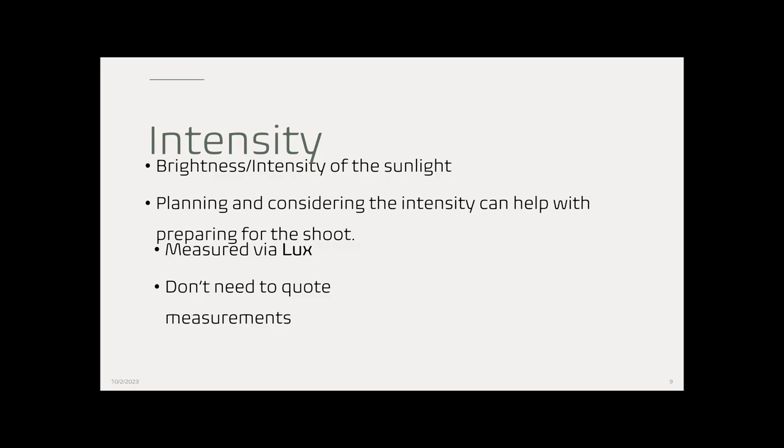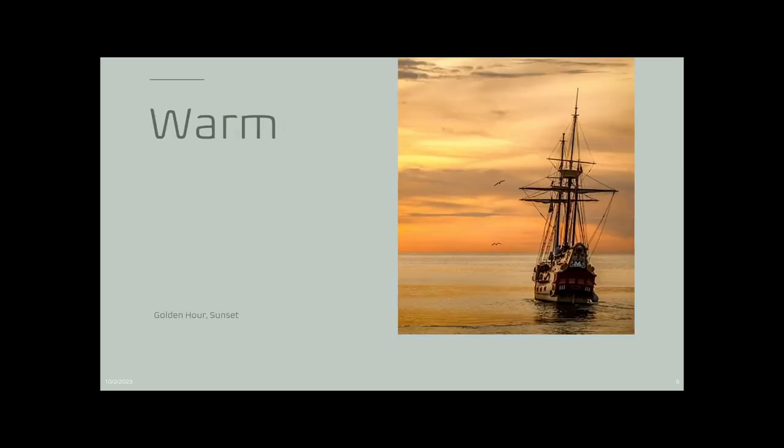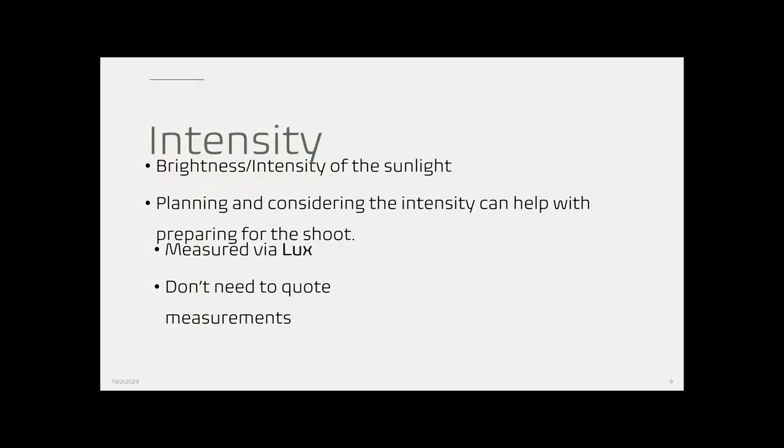We also talk about intensity — you can see the difference in intensity between the bright midday and the warm golden hour light. It's simply about how intense the sunlight is. Think about a bright blue clear day versus an overcast day. This is measured in what are called lux, though we don't go around quoting measurements. The higher the lux, the more intense the brightness; lower lux means more shadows or overcast conditions where you're losing those shadows.